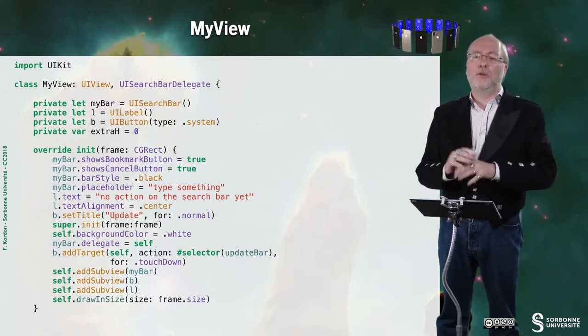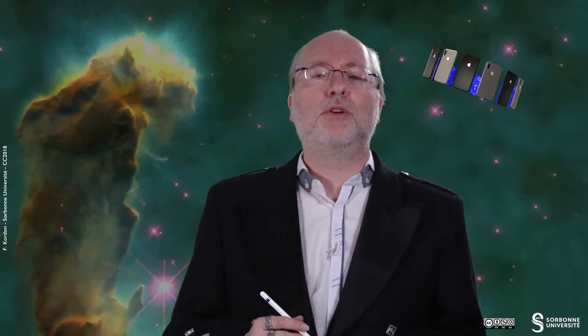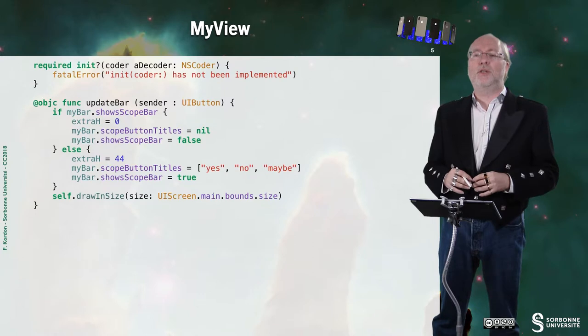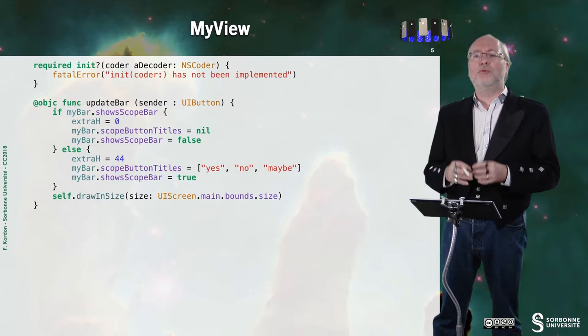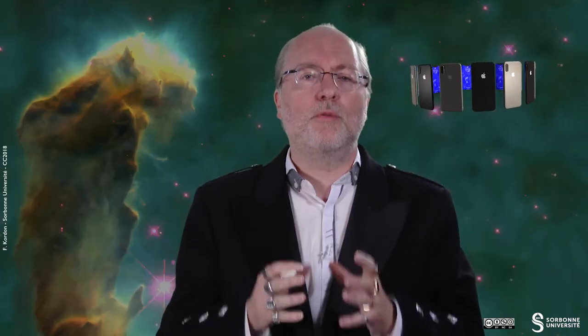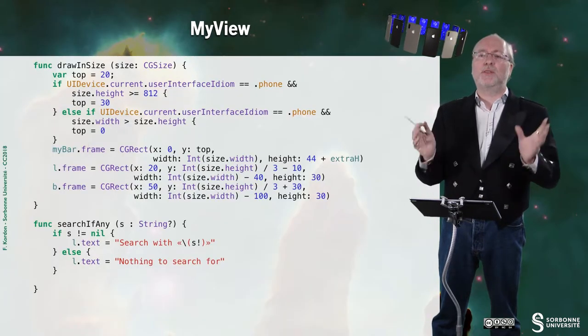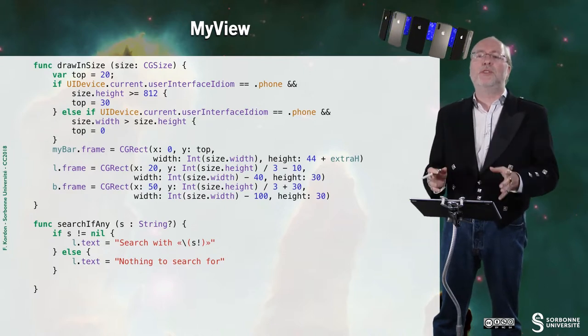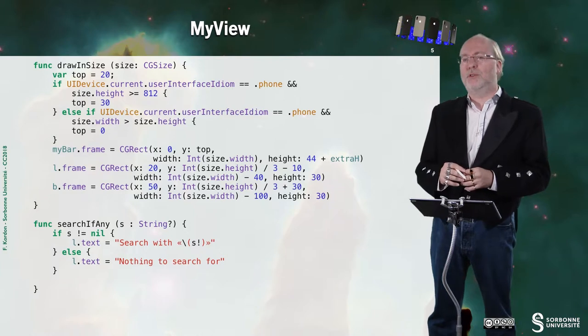Here, you have the association of the button that will let this scope bar appear or disappear. Everything is added in a sub-view. Very classical. Here, you first have this required init with coder. Not implemented. No comment. And you have the update bar function, which is a flip-flop. If the scope bar is shown, then it disappear. Otherwise, it appears. No problem. This is the main function that setups everything. I don't comment it anymore because it's very classical. You already know how to write such a function.